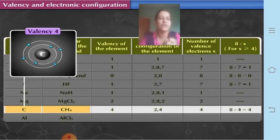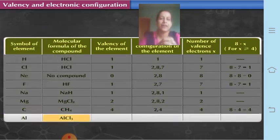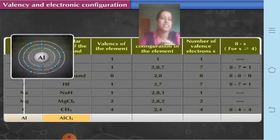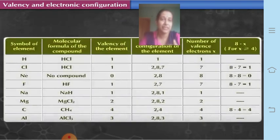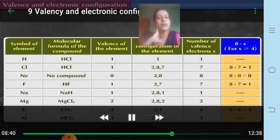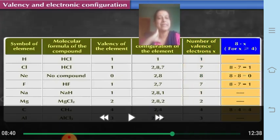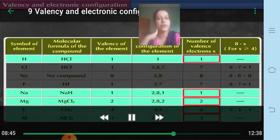In aluminium chloride (AlCl₃), valency of aluminium is 3 — you can see Cl₃. Its electronic configuration is 2, 8, 3, and the number of valence electrons is 3, so its valency is 3. Now we can see the relationship between the number of valence electrons and valency across all these elements.